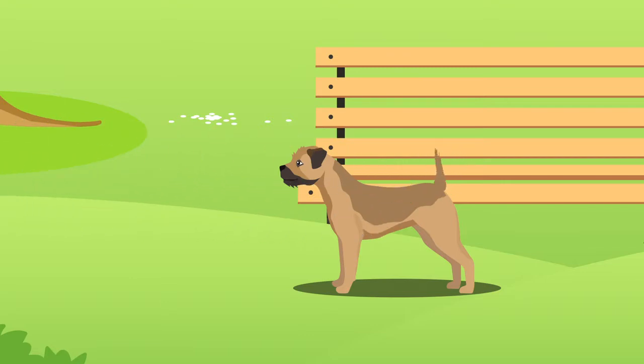Their coats are typically short and can come in a range of colors, for example, Wheaten, Grizzle and Tan, or Red.